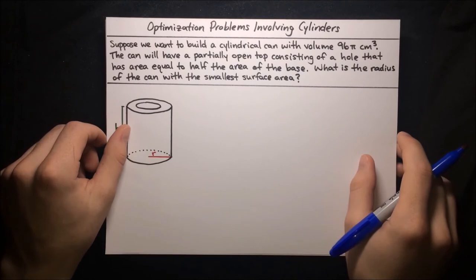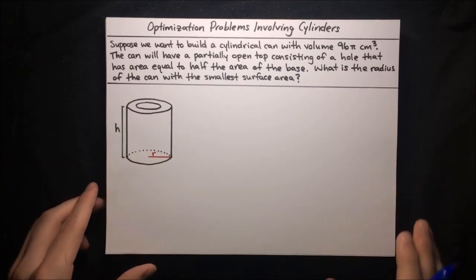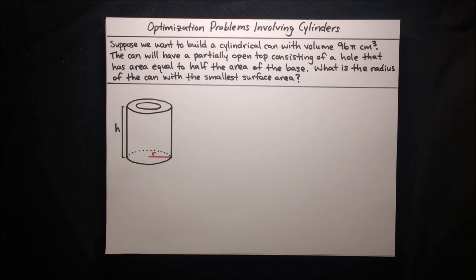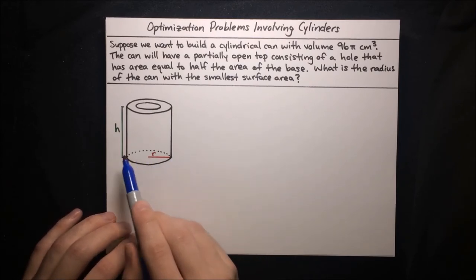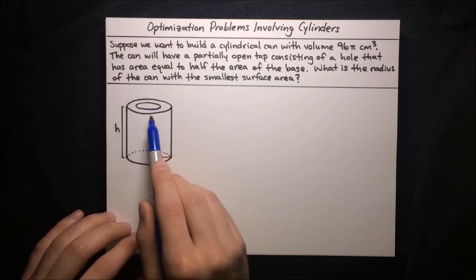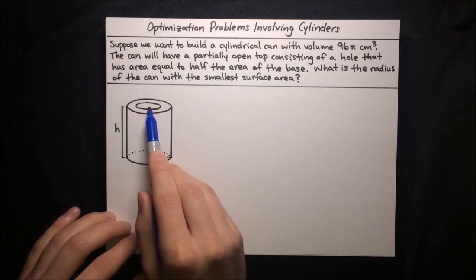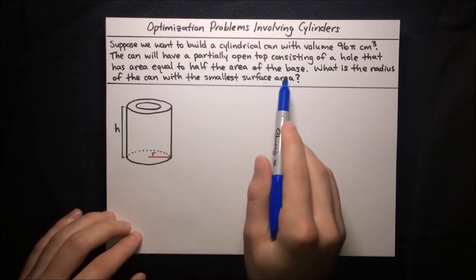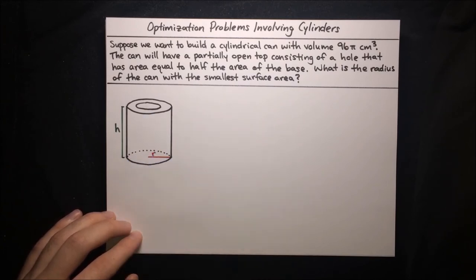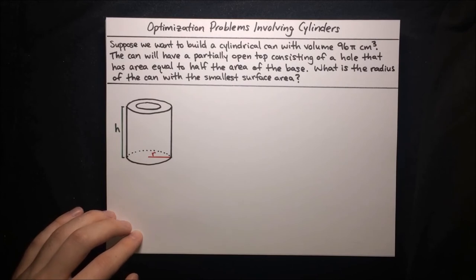Here's the next problem. Suppose we want to build a cylindrical can with volume 96 pi cubic centimeters. The can will have a partially open top consisting of a hole with area equal to half the area of the base. What is the radius of the can with the smallest surface area? We've got a diagram: the base has radius r, height is h, and there's a washer of material at the top with a hole in the interior. We want to find what radius minimizes the surface area.